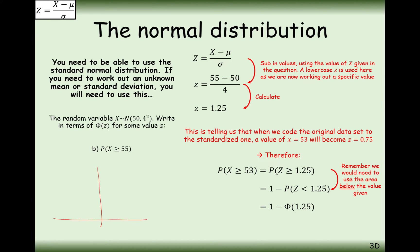The reason it's the answer is because if you want the probability of 55 or more on this normal distribution, what phi of z works out is the area to the left. You don't want that area — you want the probability that it's more than 55, which is the area to the right — so it's 1 minus phi of 1.25.